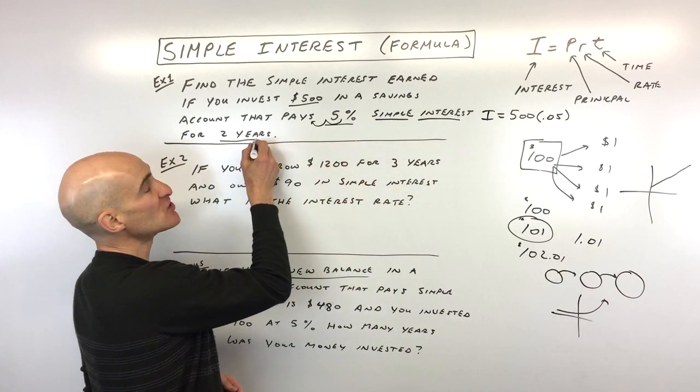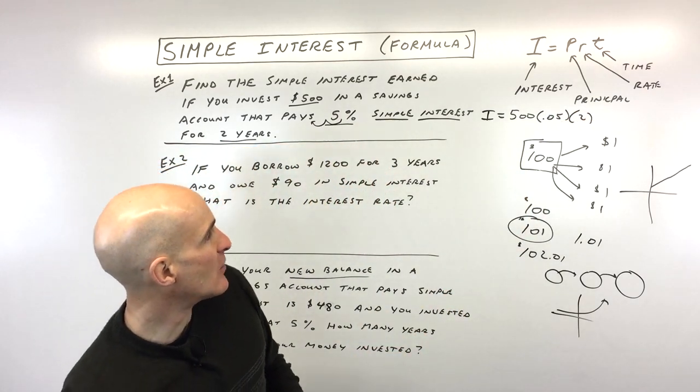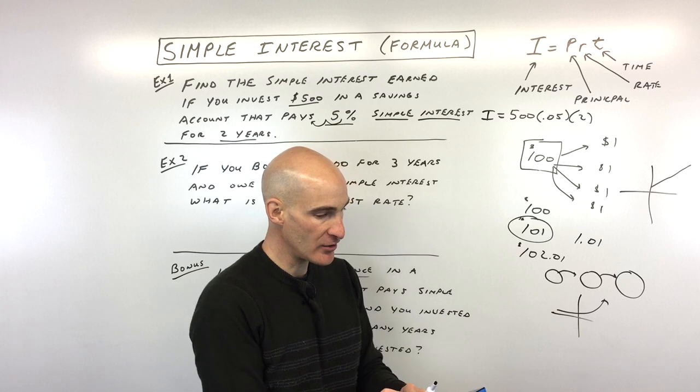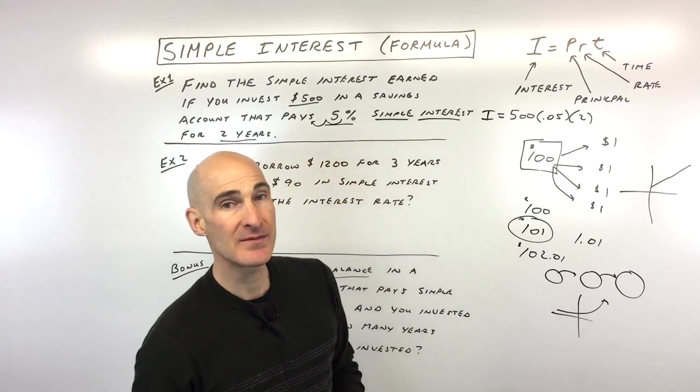And then T, the time, is two years. So we're going to multiply this by two. Let's go to the calculator. We've got 500 times 0.05 times two years. That comes out to $50.